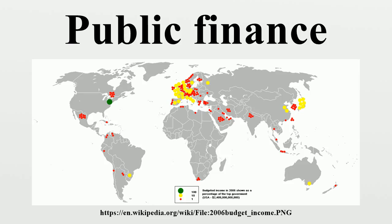The proper role of government provides a starting point for the analysis of public finance. In theory, under certain circumstances, private markets will allocate goods and services among individuals efficiently. If private markets were able to provide efficient outcomes and if the distribution of income were socially acceptable, then there would be little or no scope for government. In many cases, however, conditions for private market efficiency are violated.